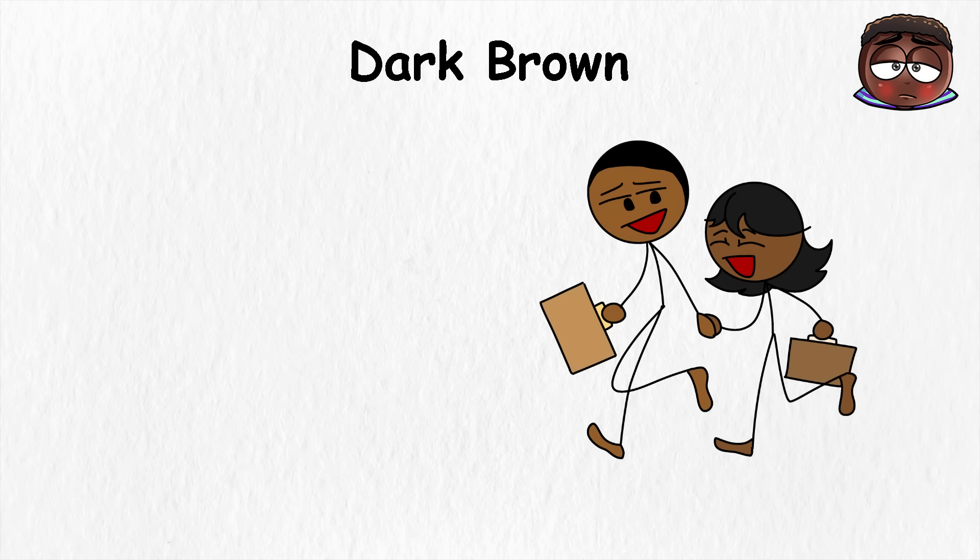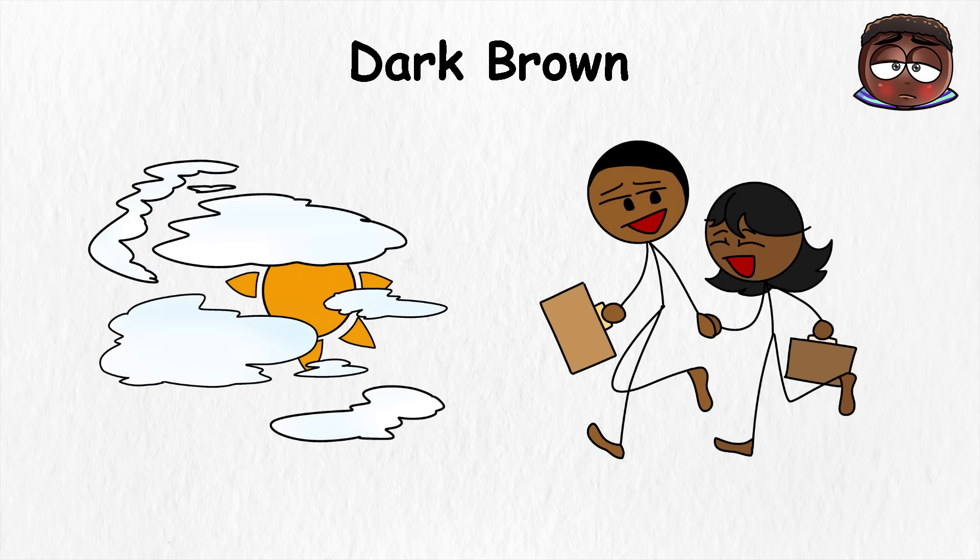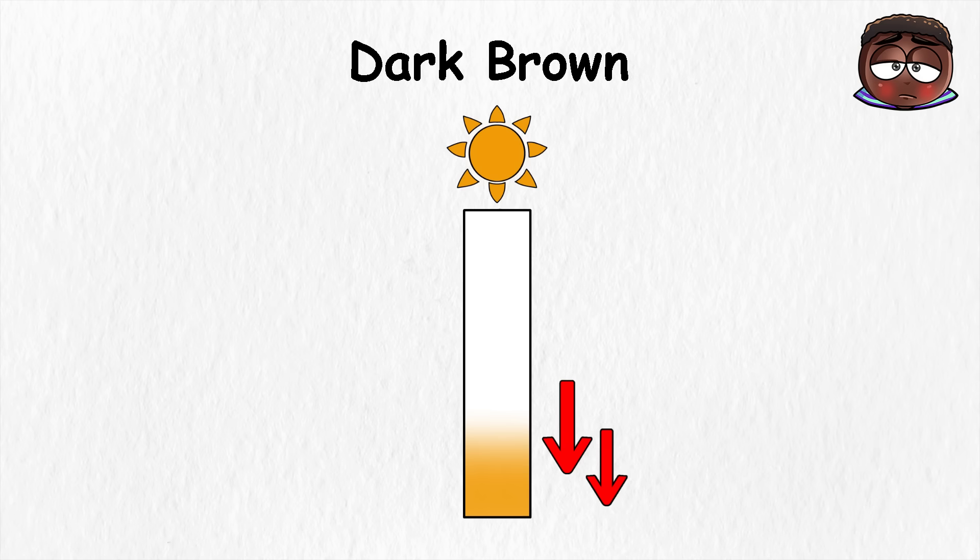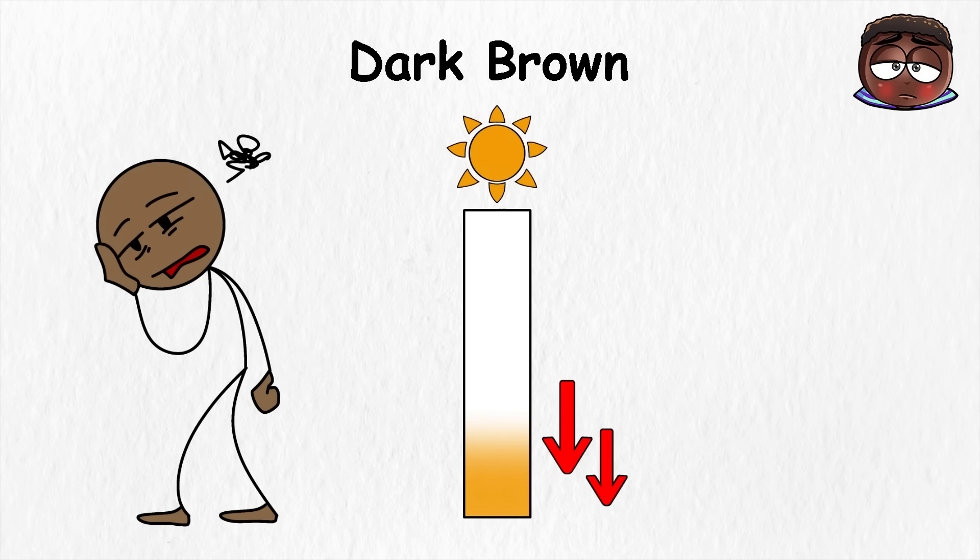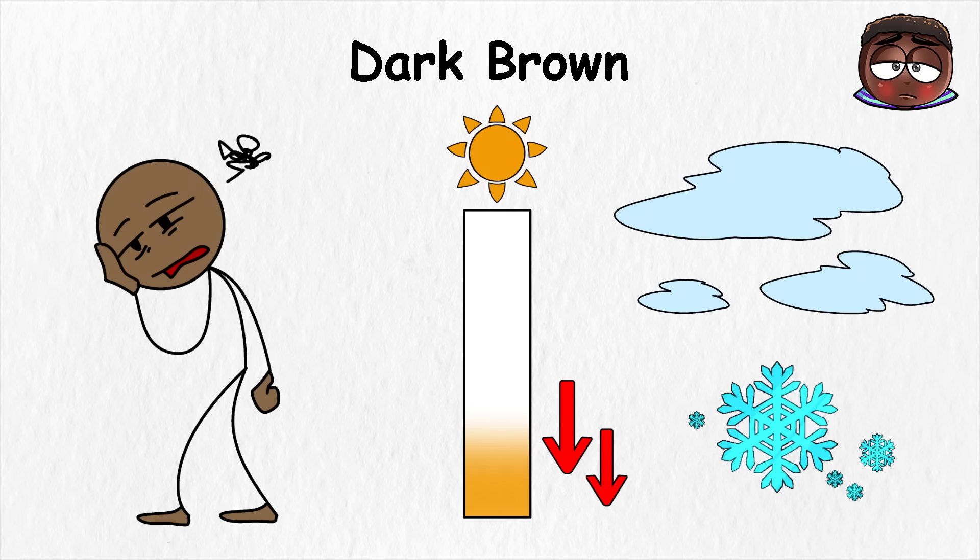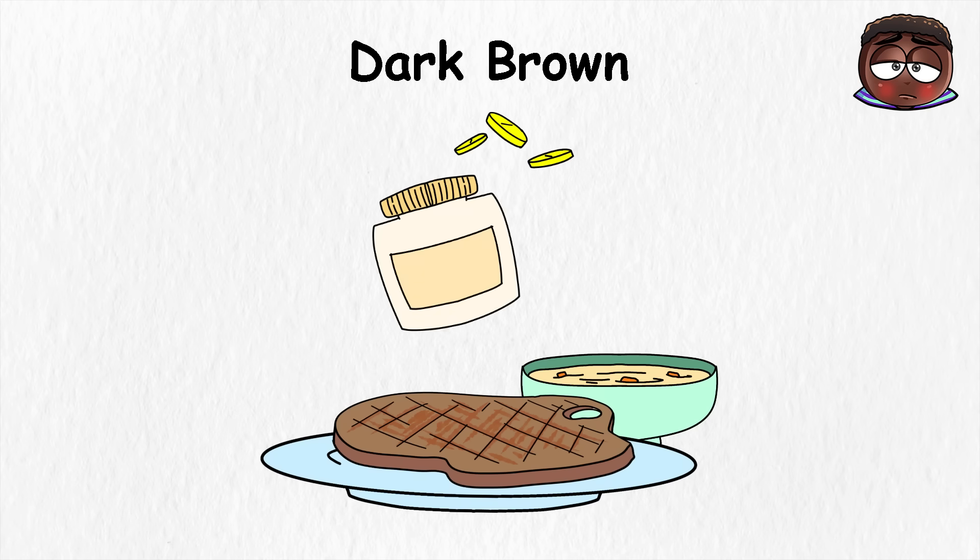When communities with dark brown skin migrated north, though, new problems came up. In low sunlight areas, making vitamin D becomes harder. That's why even today, vitamin D deficiency is more common in people with darker tones who live in cloudy or cold regions. Diet and supplements often have to fill that gap.